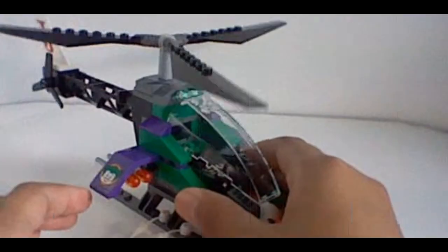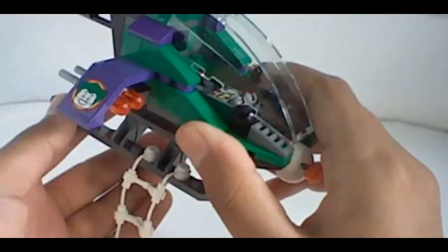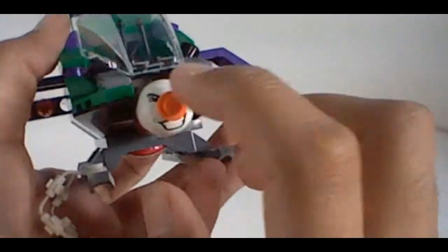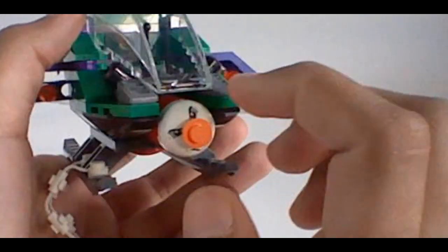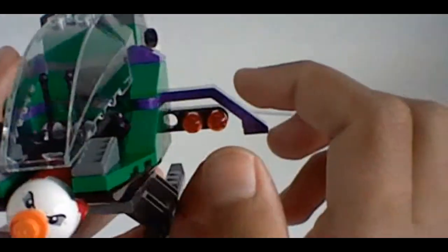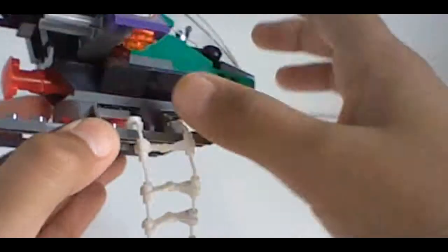Here's Joker's helicopter, and it's a pretty awesome build too. So starting from the front, you have this nice missile here or torpedo, and it's, this is actually a printed piece, so pretty nice there.